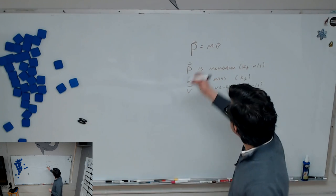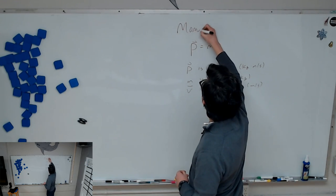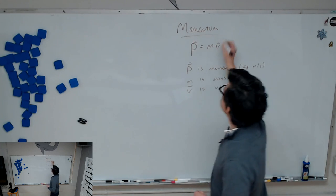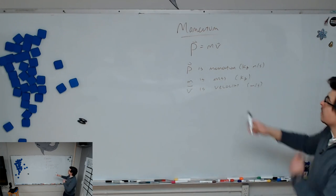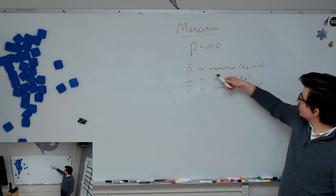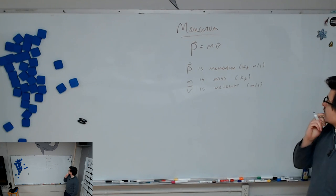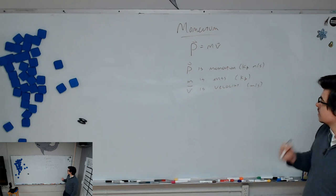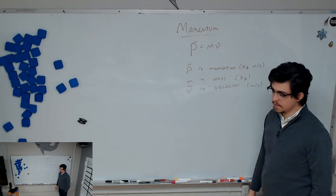Physics time. We're going to talk about momentum. I've already got the equation for momentum up here, so we have p equals mv. Both p and v are vectors, where p is momentum measured in kilogram meters per second, m is mass measured in kilograms, and v is velocity measured in meters per second.